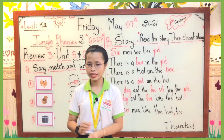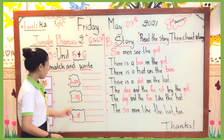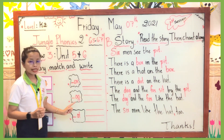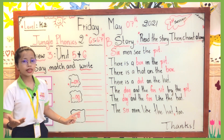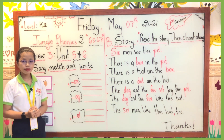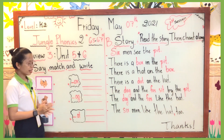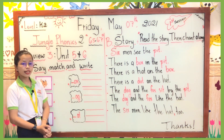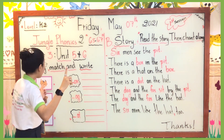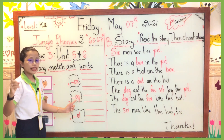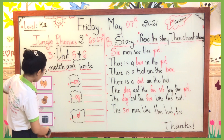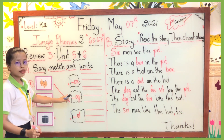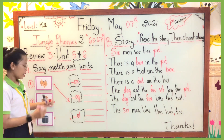Now let's do the matching. The first picture is 'dog.' Between the three sounds — sound A, B, and C — which is the correct one for 'dog'? The correct answer is the OG sound, which is our second sound. The word is 'dog' — it matches with the OG sound. Spell it: D-O-G, dog.